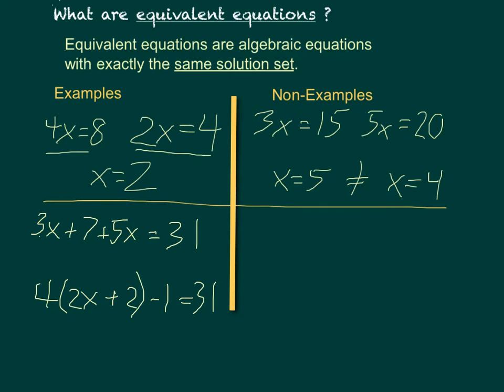Now, these two equations are equivalent because if I simplify them, in this case by combining the 3x and the 5x to 8x, it gives me 8x plus 7 equals 31.